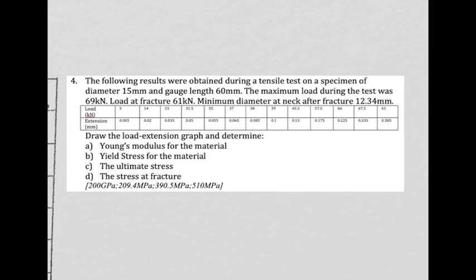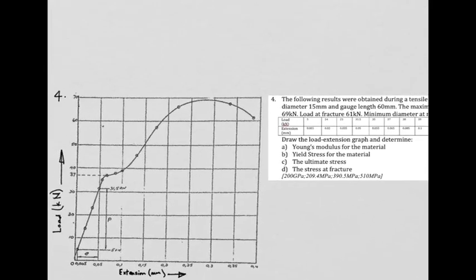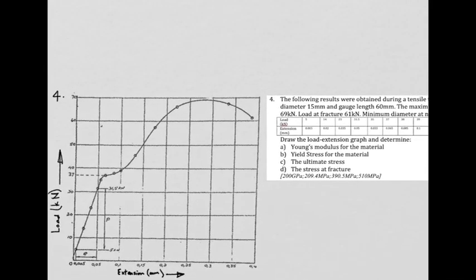Now in the fourth one, you are given typical results of a tensile test and a table of various loads versus corresponding extensions. As is typical of a question like this, the first thing to do is to draw the load extension graph. Then the very first thing you've got to do is find the Young's modulus for the material. Remember that applies to the straight line portion of the graph. Let's look at how the graph plots. There's our typical straight line portion, there's the yield occurring, and here's maximum load and failure.